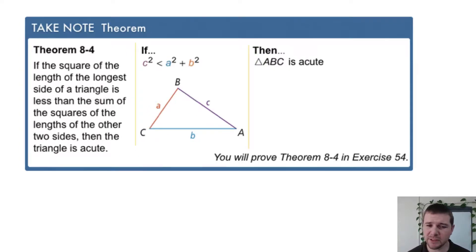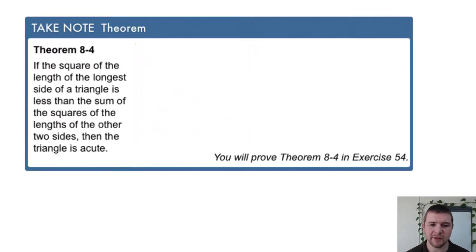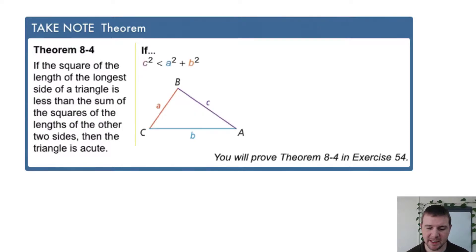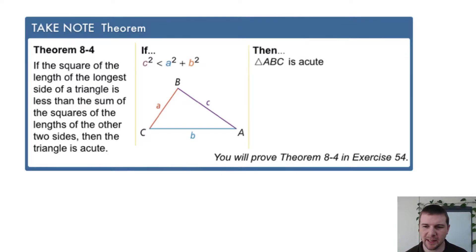Theorem 8.4 states: if the square of the length of the longest side of a triangle is less than the sum of the squares of the lengths of the other two sides, then the triangle is acute. So if, in this diagram, C squared is less than A squared plus B squared, then triangle ABC is acute.